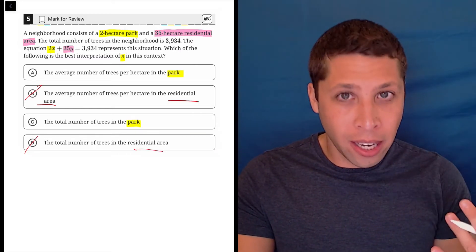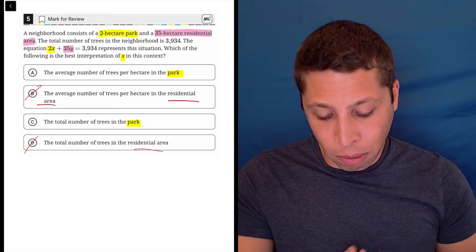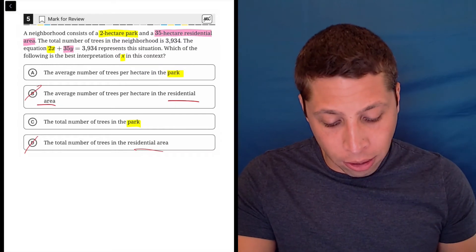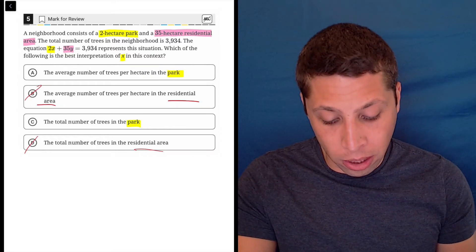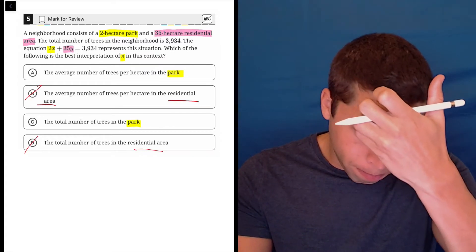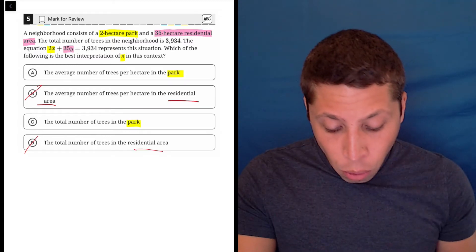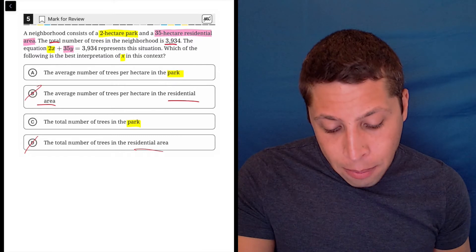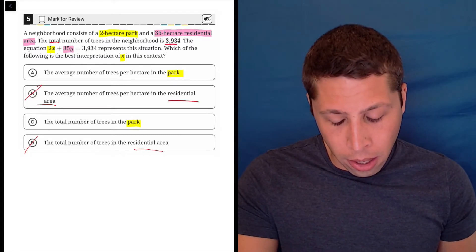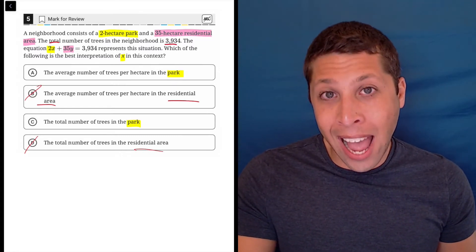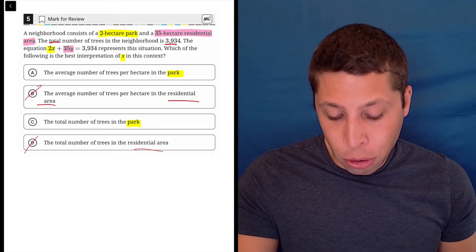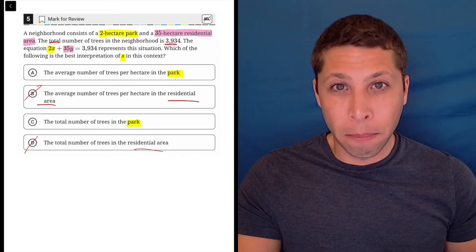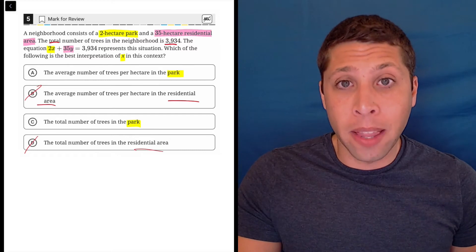Now I have to be a little bit more understanding of the story. What would the x represent? The average number of trees per hectare in the park or the total number of trees in the park? Well, if the whole equation is giving me the total number of trees in the neighborhood of 3934, we wouldn't want the x by itself to be the total number of trees in the park.